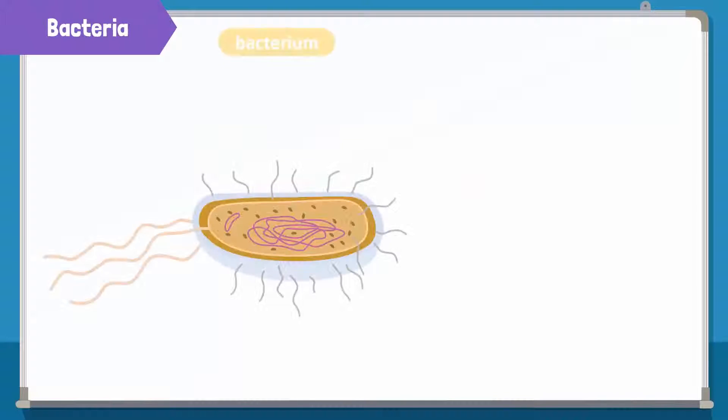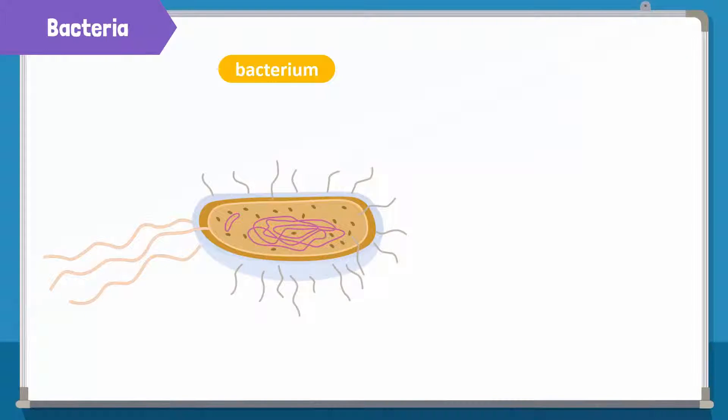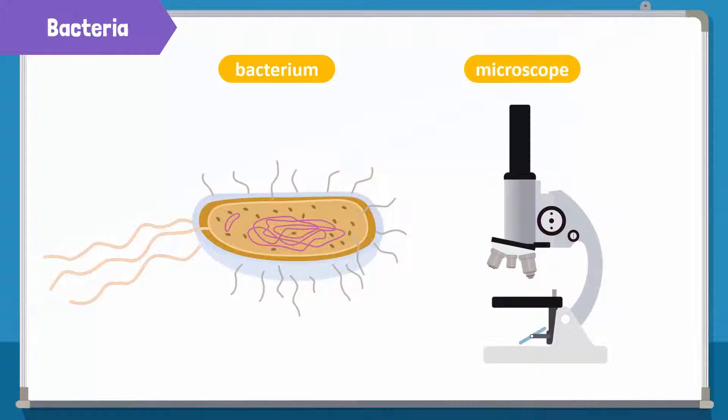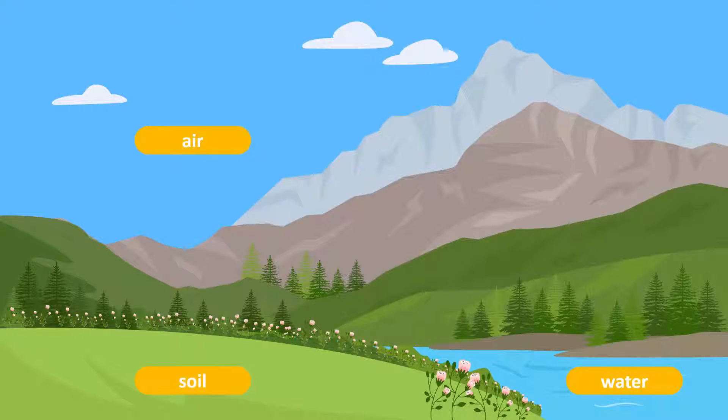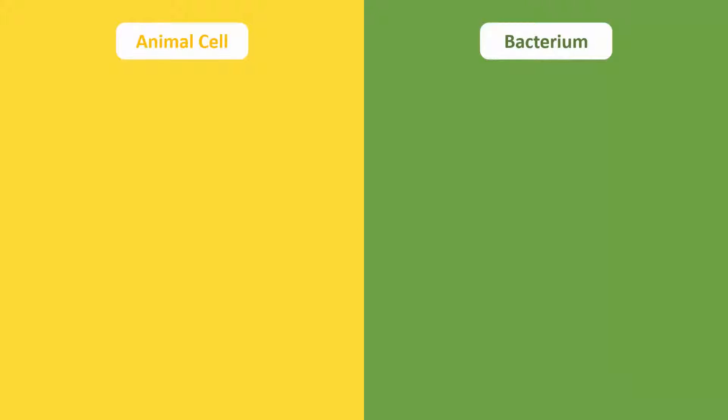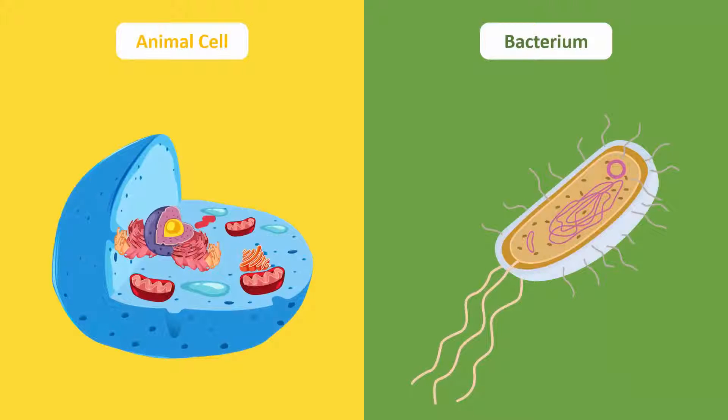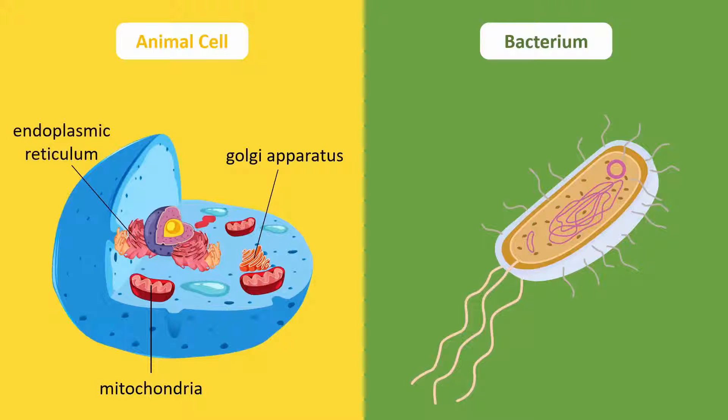Bacteria, plural for bacterium, are tiny living things that can only be seen with the help of a microscope. They are found everywhere, like in the air, water, and in the soil. Many of the organelles found inside a plant or animal cell, such as mitochondria, Golgi apparatus, and endoplasmic reticulum, are absent in a bacterial cell.